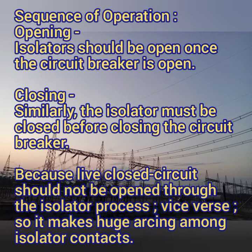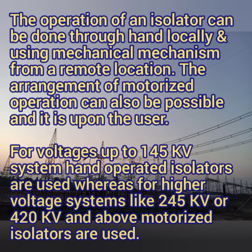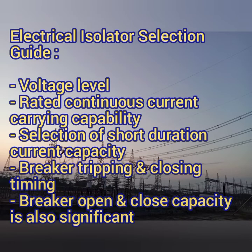For the closing sequence, we need to close the isolator first and then close the breaker, because this reduces the arcing. The operation of the isolator can be done locally by hand or by mechanical mechanisms remotely. It can be motorized or manual. Up to 145 kV, hand operation is used; above 145 kV, motorized operation is preferred. In emergency conditions, hand operation is also available even for motorized isolators.